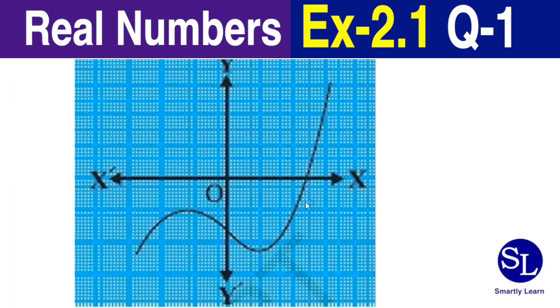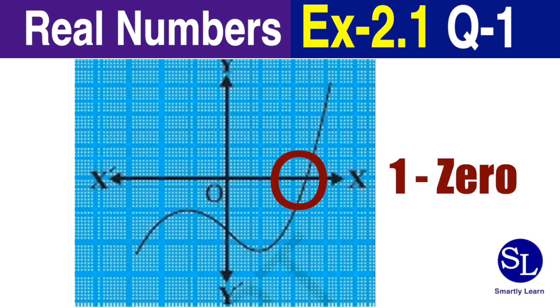If you see the graph, it looks like this. All you have to do is count the number of places where this curve hits the x-axis. In this example, there is exactly one point where this curve hits the x-axis. Therefore, this curve has exactly one zero of the polynomial.